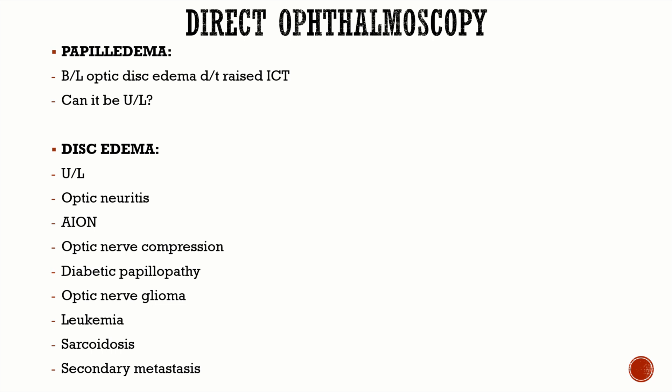For postgraduate direct ophthalmoscopy viva questions, know the clinical method and be familiar with papilledema and optic atrophy, including how to differentiate papilledema from pseudopapilledema. Papilledema is bilateral optic disc edema due to raised intracranial tension (ICT), caused by a tumor, abscess, tuberculoma, meningitis, or idiopathic intracranial hypertension. Since raised ICT is a bilateral process, papilledema is typically bilateral.